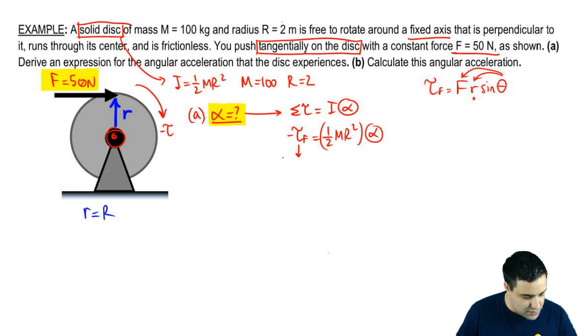So this is going to be the force you're applying. Little r is the radius. And then sine of theta. The angle between the force, theta is the angle between the force and the R vector. The angle between those two is this right here, which is 90. So I get sine of 90.